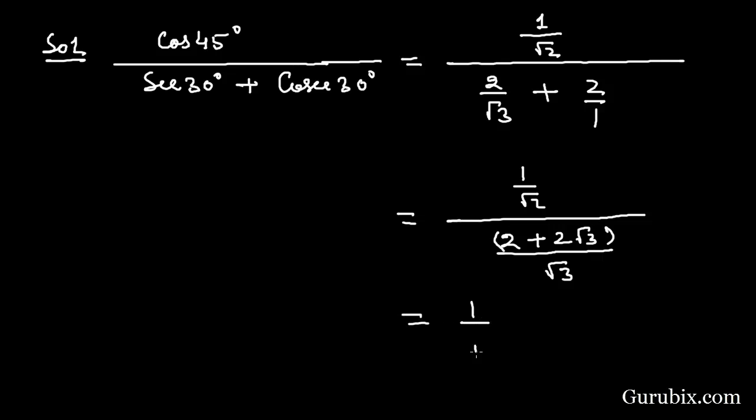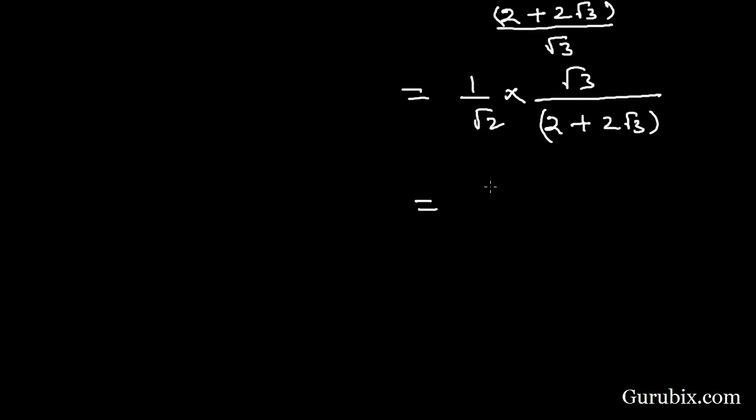Solving further, this equals 1 over square root of 2 times square root of 3 over 2 plus 2 square root 3. This equals square root of 3 over 2 root 2 plus 2 root 6.